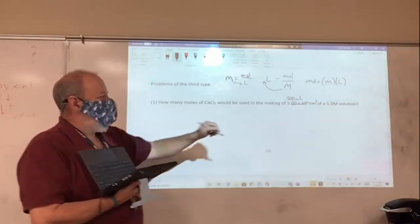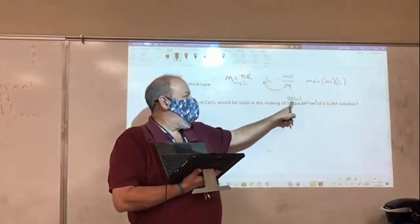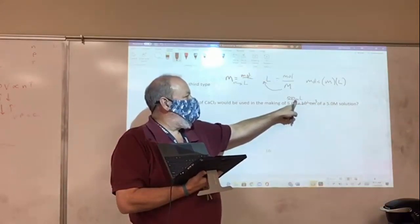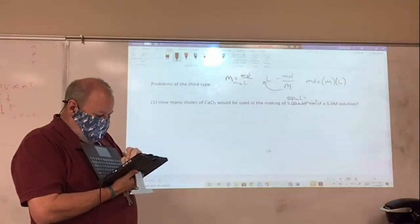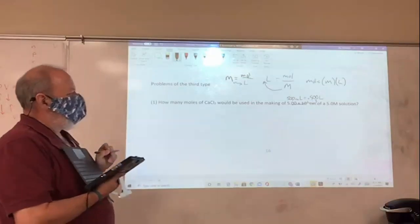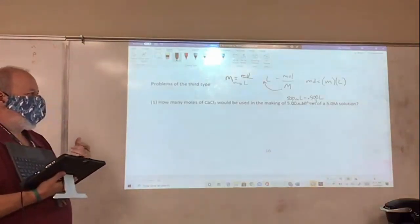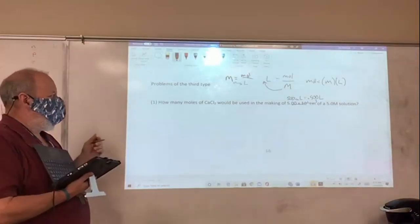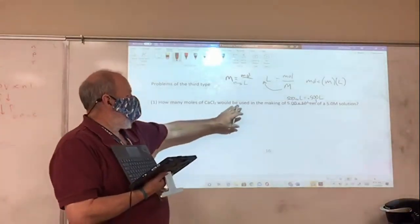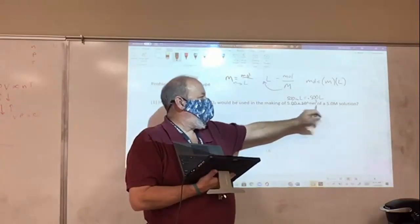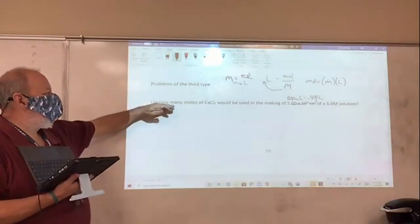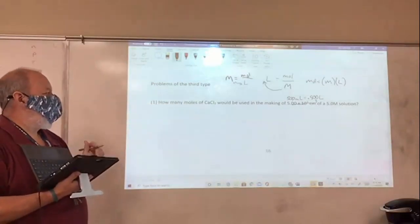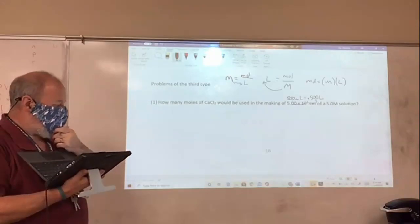And I know that milliliters is thousandths of a liter. So I have 500 thousandths of a liter, and I'll actually need liters anyway. So I'm just going to put 0.500 liters there. So I've got my numbers straight. You don't have to do that, but that's just what I do. So how many moles of calcium chloride would be used in making 0.5 liters of a 5.0 molar solution?